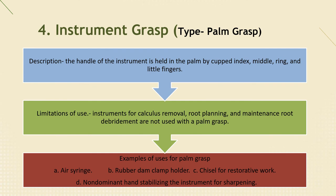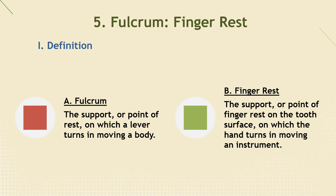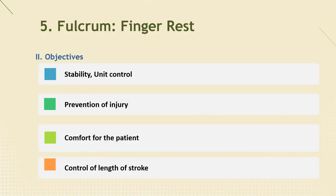Contents 5: fulcrum finger rests. Fulcrum finger rests are always used when instruments are applied to the teeth and gingiva. Definition — fulcrum: the support or point of rest on which a lever turns in moving a body. Finger rest: the support or point of finger rest on the tooth surfaces on which the hand turns in moving an instrument. An effective, well-established finger rest is essential to the following.